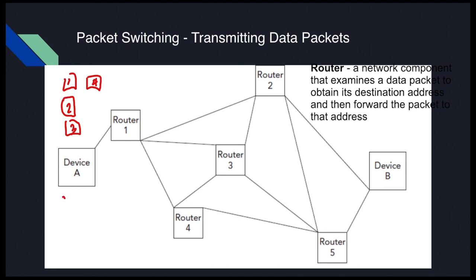Device A might be your computer and Device B your friend's computer. In any network, including the internet, between any two computers there are a number of routers. These routers help guide data packets to the correct destination. What they do is read the destination address in each data packet, and then based on that address, they send the data packet down the correct path.